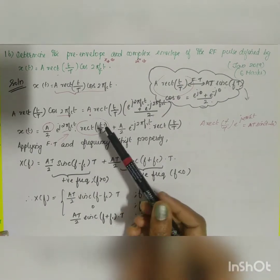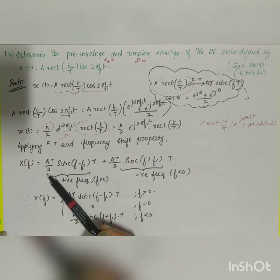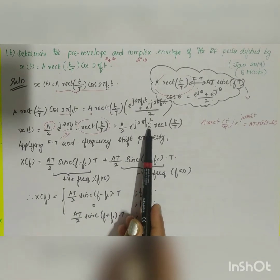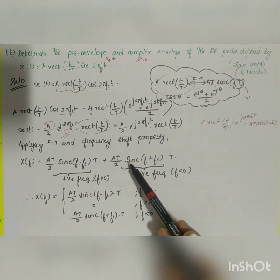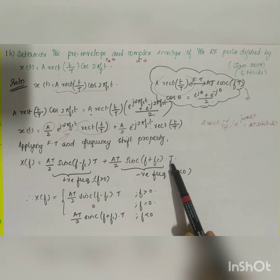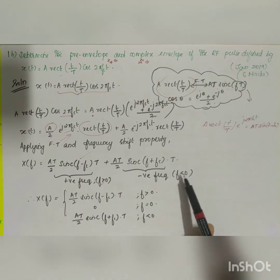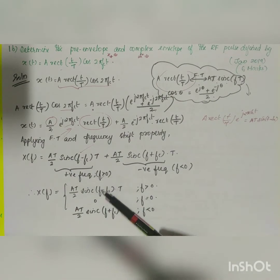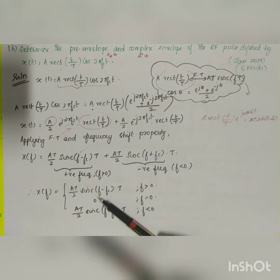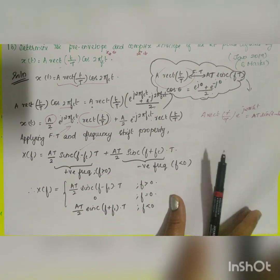Applying the frequency shift, X(f) = (AT/2)·sinc((f − fc)·T) for the positive shift term. Similarly, e^(−j2π·fc·t)·rect(t/T) gives (AT/2)·sinc((f + fc)·T). The term with (f − fc) corresponds to positive frequency (f > 0) and the term with (f + fc) corresponds to negative frequency (f < 0). So X(f) = (AT/2)·sinc((f − fc)·T) for f > 0, 0 for f = 0, and (AT/2)·sinc((f + fc)·T) for f < 0.